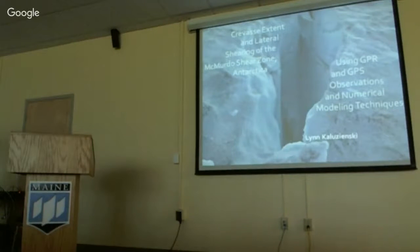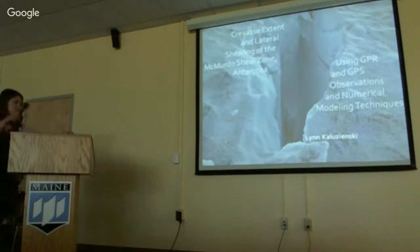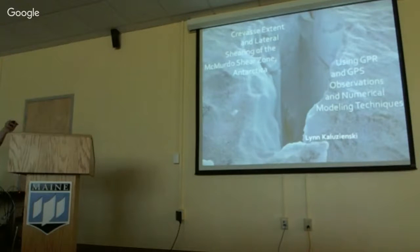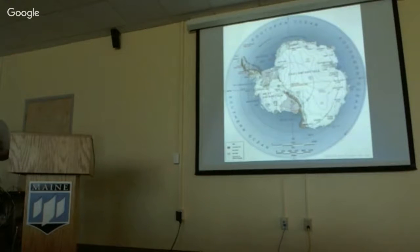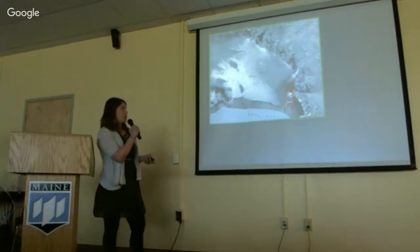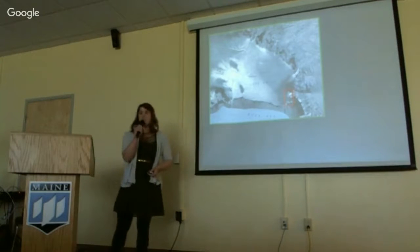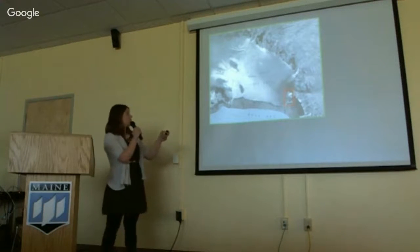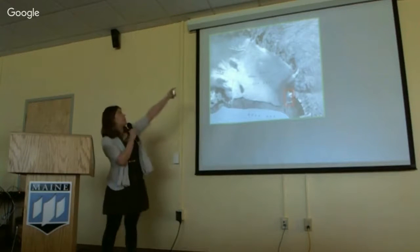Next up is Lynn, talking about proboscis and lateral shearing of the McMurdo shear zone in Antarctica using GPR and GPS observations and numerical modeling. My work involves studying the Ross Ice Shelf, which is the largest ice shelf in Antarctica. I am interested in the western lateral margin — this area right here — called the McMurdo shear zone. North is actually at the bottom of the page because the South Pole is way off the page at the top. As ice moves around Minna Bluff, it moves quite fast along the Ross Ice Shelf, but all the ice behind this outcrop is moving much slower on the McMurdo side. When faster-moving ice comes in contact with slower-moving ice, it shears and pulls apart, creating this massive shear zone.